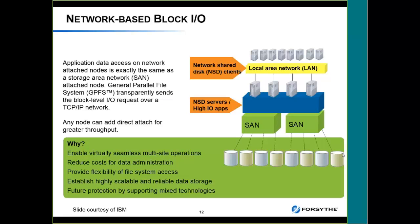GPFS uses a network-based block I/O protocol. If a node doesn't have fiber adapters and isn't connected to those LUNs, it does a network connection to one of the nodes that has a fiber connection to get the data, sending it as a block-level I/O request over TCP/IP. That's very easy to implement. People typically do a combination — some direct SAN attached clients and some network-attached clients for nodes that don't need to perform as well.